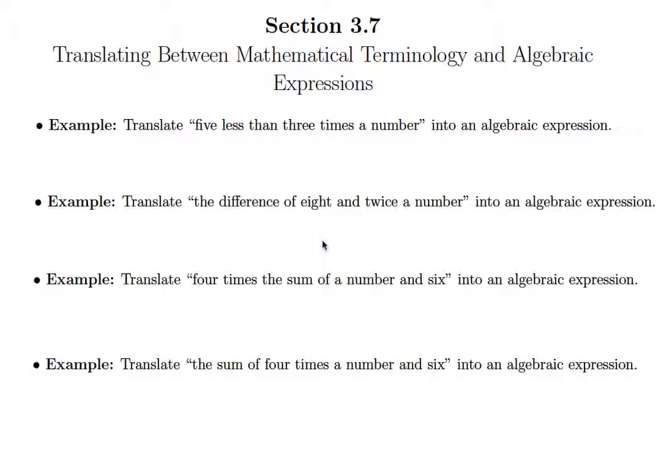Here we have four different expressions to translate. So let's start with the first one. It says translate "five less than three times a number" into an algebraic expression. One thing that I suggest is to take these problems in two stages. The first stage would be to take all the numbers that are written in words and write those using numerals.